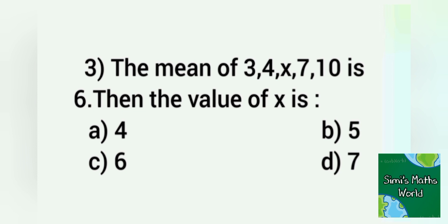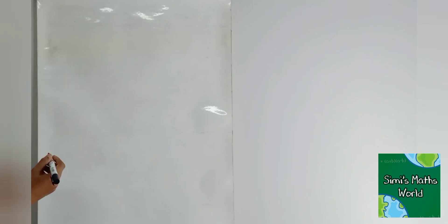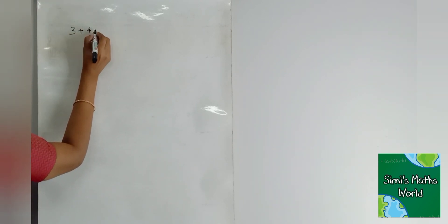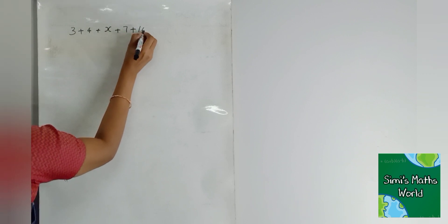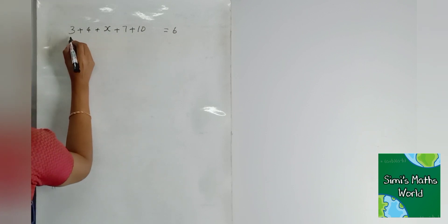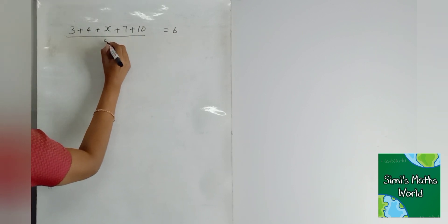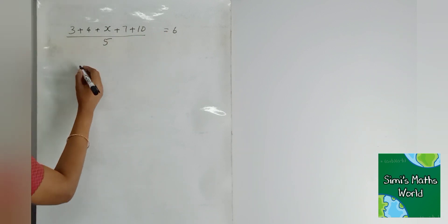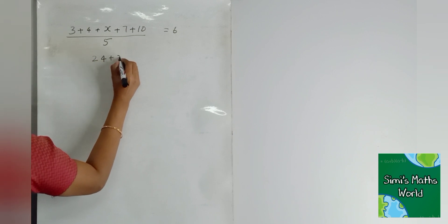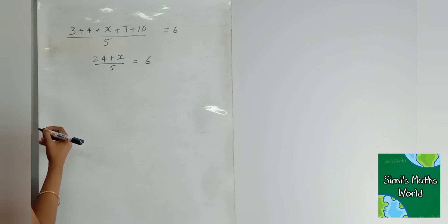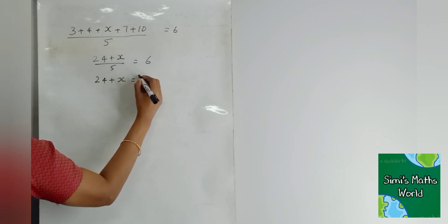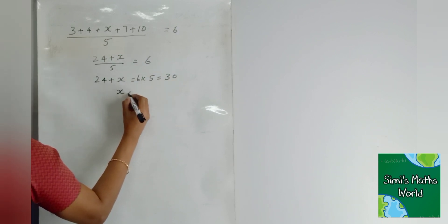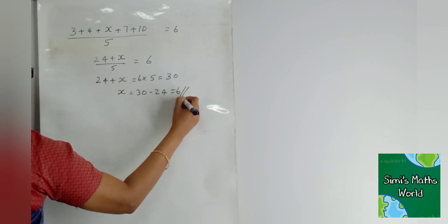Third question: The mean of 3, 4, x, 7, and 10 is 6. Find the value of x — option A: 4, option B: 5, option C: 6, option D: 7. Solution: (3 + 4 + x + 7 + 10) divided by 5 equals 6. So 24 plus x equals 30. Therefore x equals 30 minus 24 equals 6. Answer: option C.